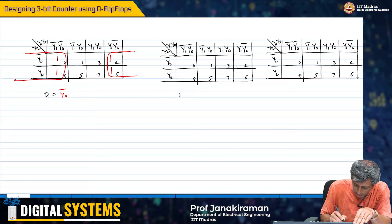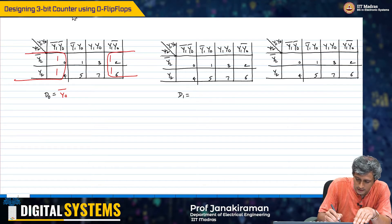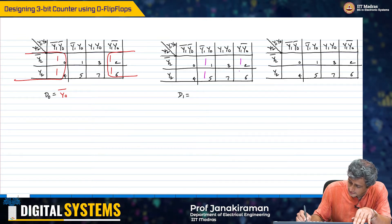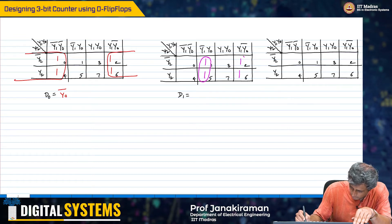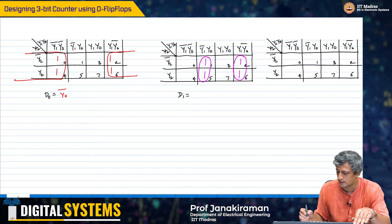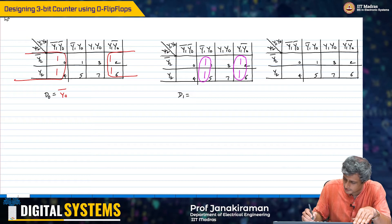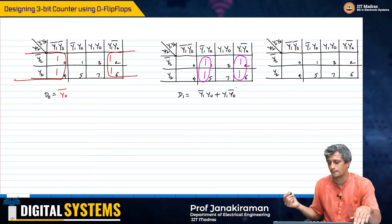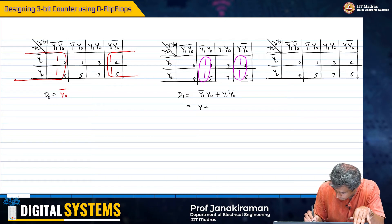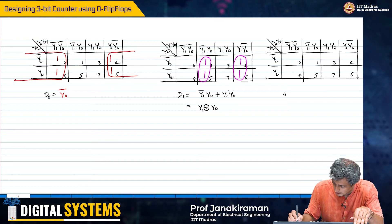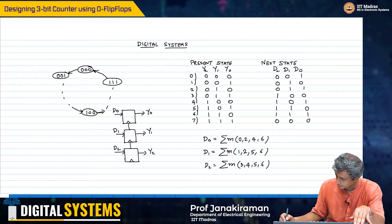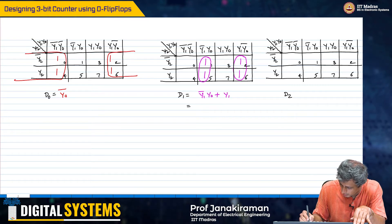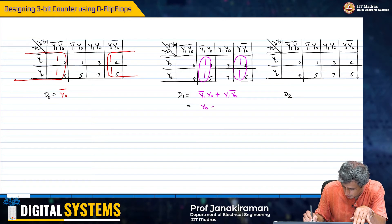D1 on the other hand is the sum of minterms 1, 2, 5, and 6. After K-map simplification, this becomes y1 bar·y0 plus y1·y0 bar, which is y0 XOR y1.